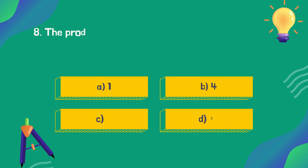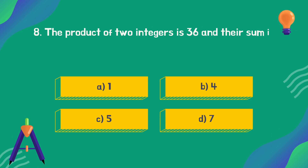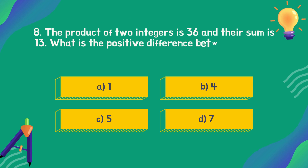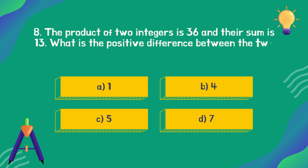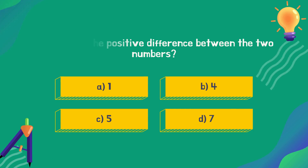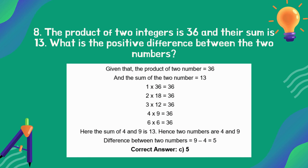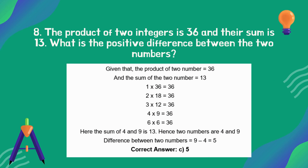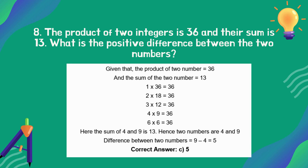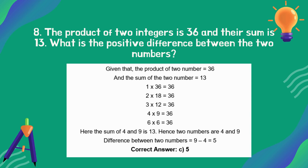The product of two integers is 36 and their sum is 13. What is the positive difference between the two numbers? The correct answer is option C: 5.